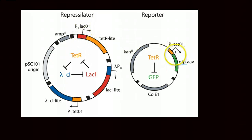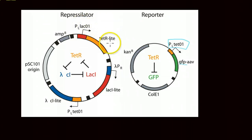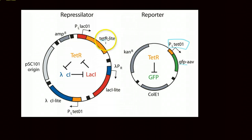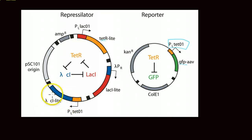The elements that come before the actual coding sequence are called promoters. You can see each coding sequence has a promoter. What actually happens is that the product — for example, TetR — inhibits another one of the promoters, causing the associated gene to not be processed, so there's no protein output.